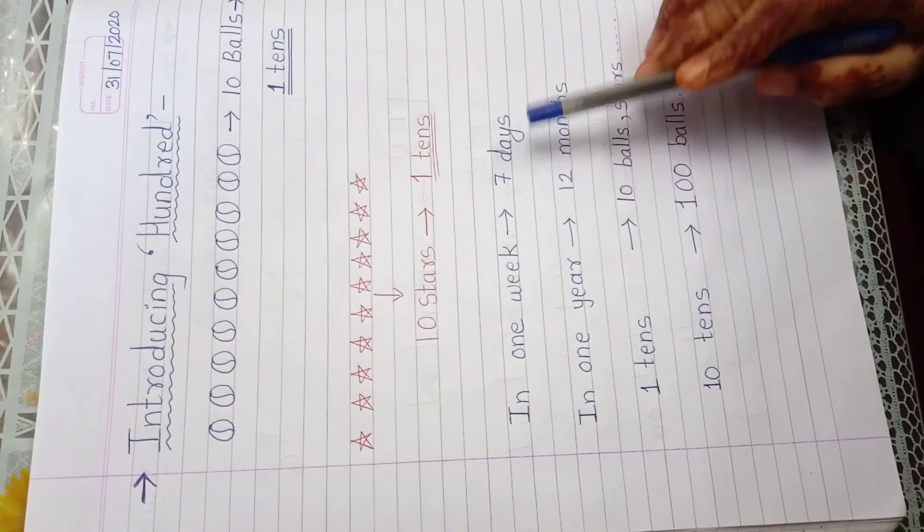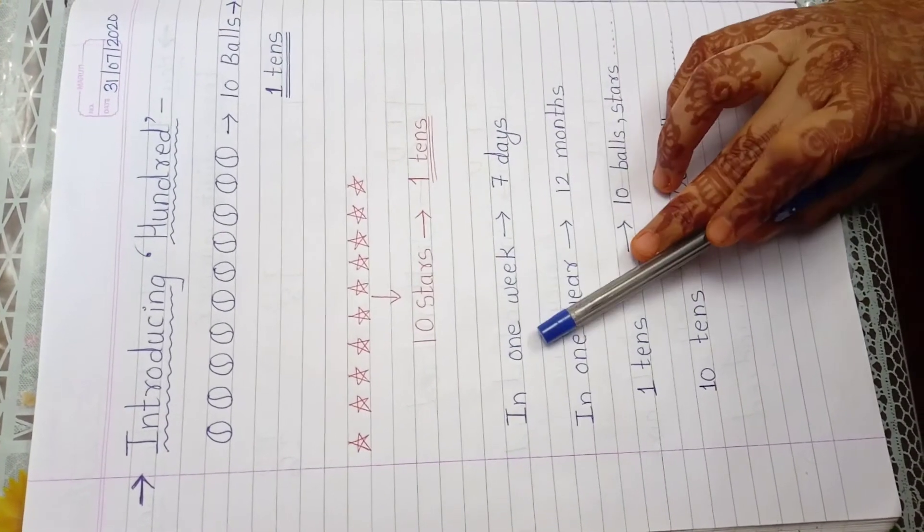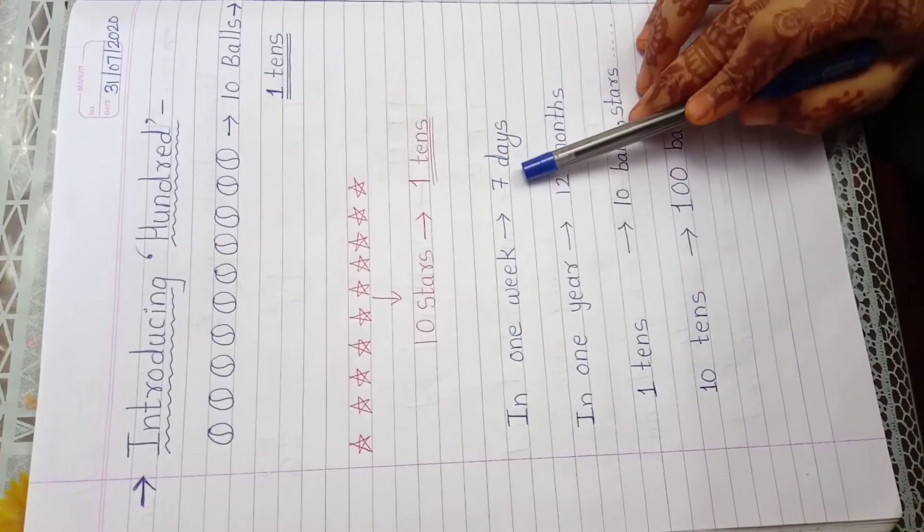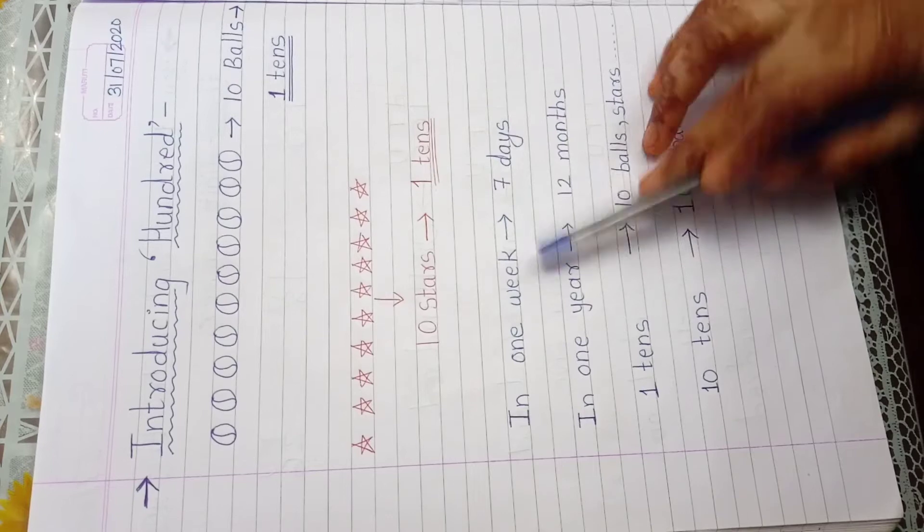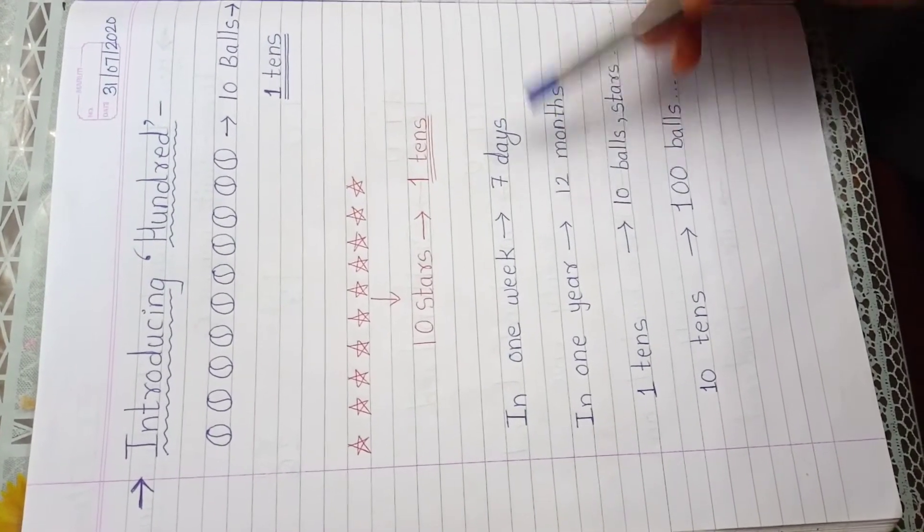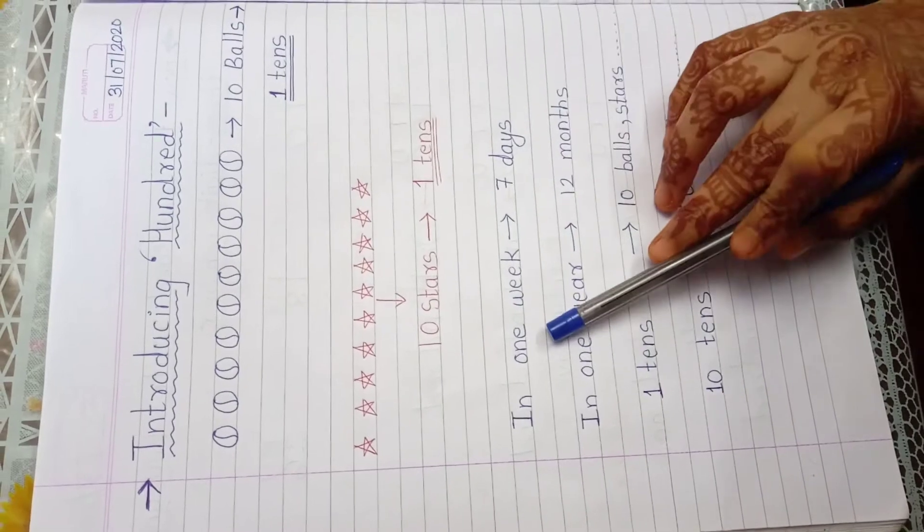For example, 7 days is equal to 1 week. Okay. Means 7 days is equal to 1 week. Sunday, Monday, Tuesday, Wednesday, Thursday, Friday, Saturday. Okay. So that 7 days make 1 week.